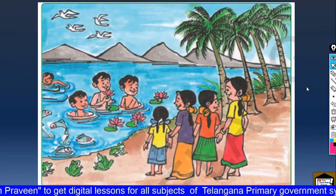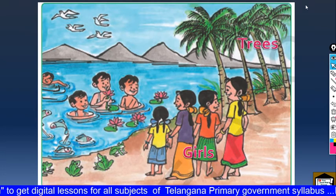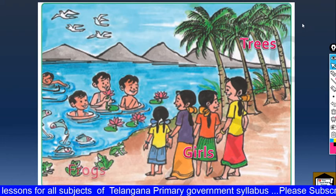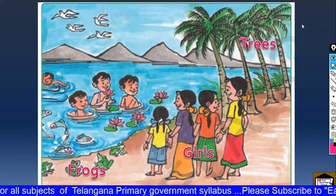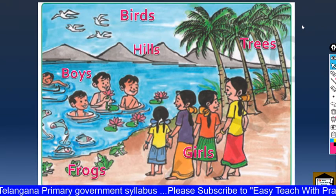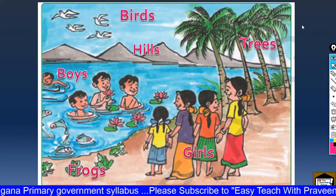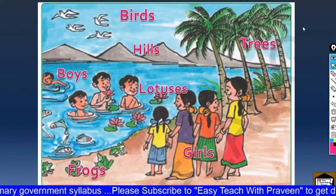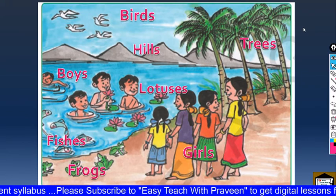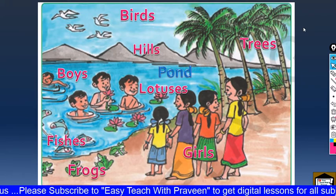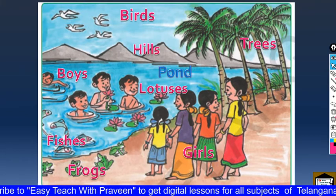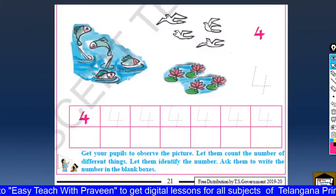So this is the counting. We see girls, trees, frogs, birds, hills, boys, lotuses, fishes — all these are in a pond. This is the picture. Let us move on to the next page.